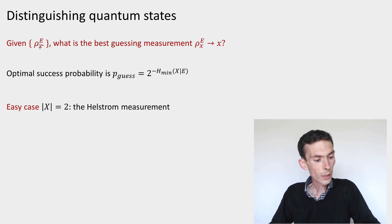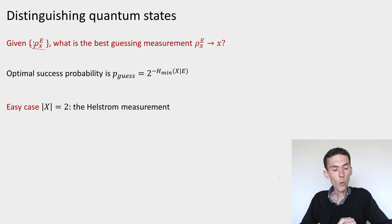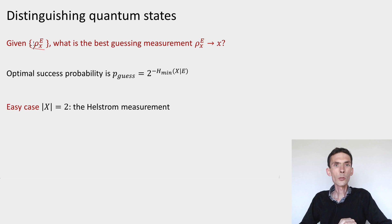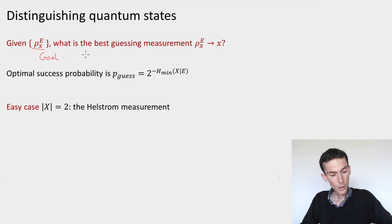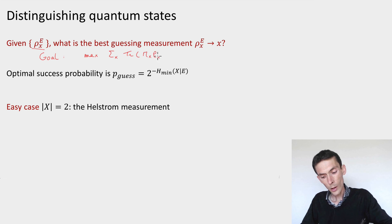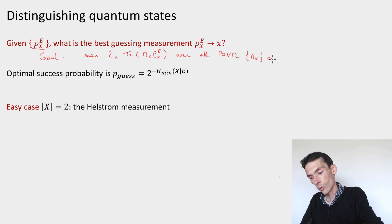Imagine that you're given a family of density matrices ρ_x. Actually, these might not be normalized — they're positive semi-definite but might not have trace 1. The question is: what is the best measurement that can be performed on one of these density matrices, chosen at random with probability proportional to its trace, that lets us recover the index x? We want to maximize the sum over all possible x of the trace of m_x ρ_x, over all POVMs m_x on system E.